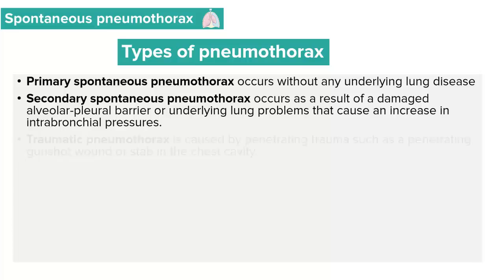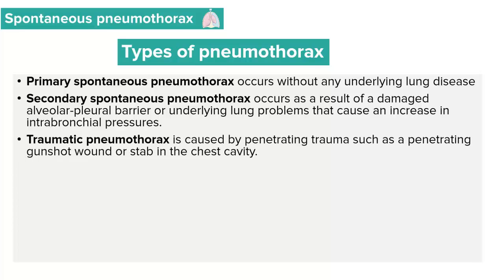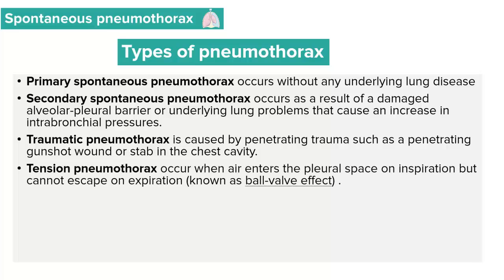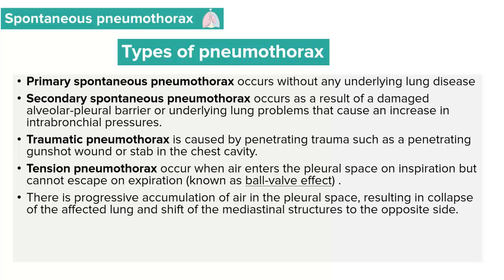Spontaneous pneumothorax and traumatic pneumothorax can complicate and lead to the development of tension pneumothorax. In tension pneumothorax, there is air entry into the pleural space during inspiration, but this air fails to get out during expiration — forming what's known as a ball valve effect. This results in progressive accumulation of air into the pleural space, causing collapse of the affected lung and a shift of the mediastinal structures to the opposite unaffected side.